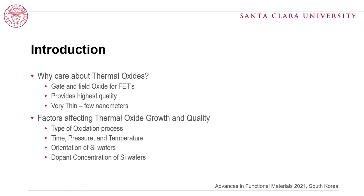Let's talk about the factors affecting thermal oxide growth and quality. The first factor is the type of oxidation process. We have dry, wet, and CVD types of oxidations. Dry involves pure oxygen; wet involves steam, removing the steam and then extracting the oxygen from it.